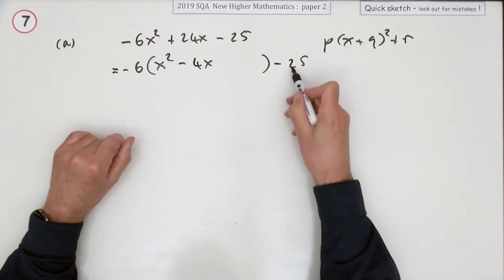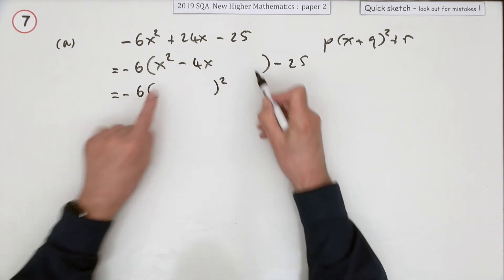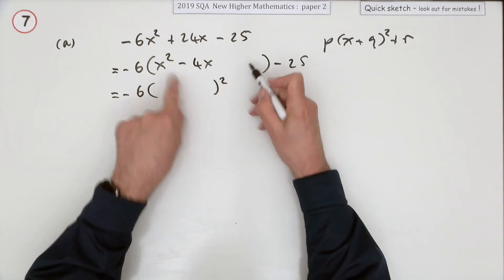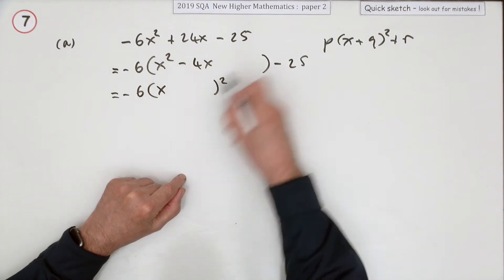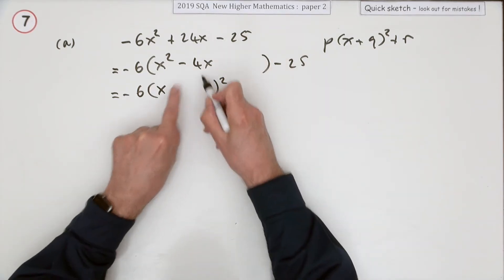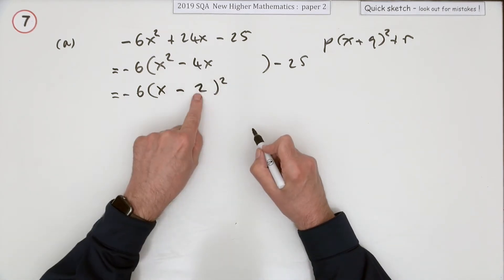Now you can incorporate the 25 if you like, I'm just going to leave it outside so it doesn't interfere with the next part. How can you recreate a square bracket that produced this? Well, square the first so it must be x, square last I don't know yet, but twice the product is negative 4x so that must be minus 2.